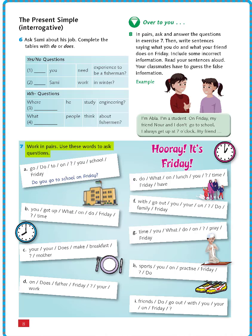Exercise 7: work in pairs, use these words to ask questions. Question A: the words given are 'go, do, to, on, you, school, Friday' with a question mark. In this question we have unordered words and we will arrange them to form a correct sentence. Since there is a question mark, it is a question, so we start with 'do', then the subject 'you', then the verb 'go', then the rest: 'to school on Friday'.